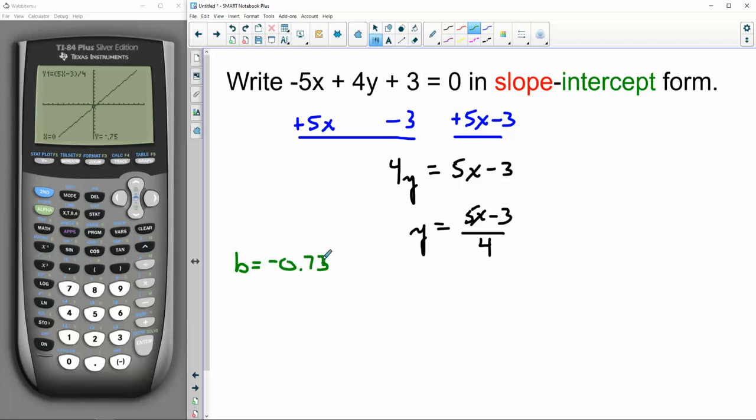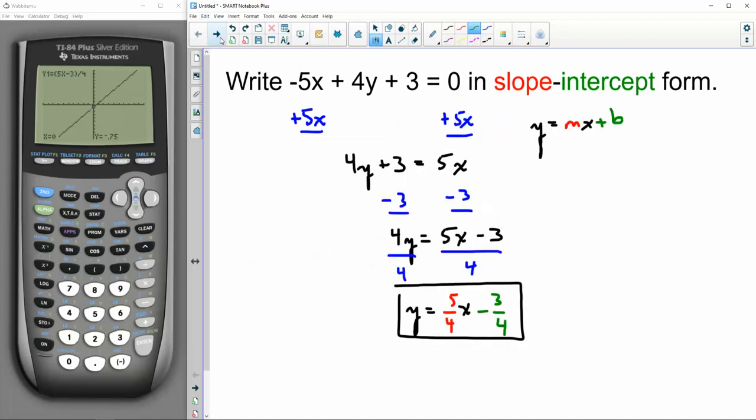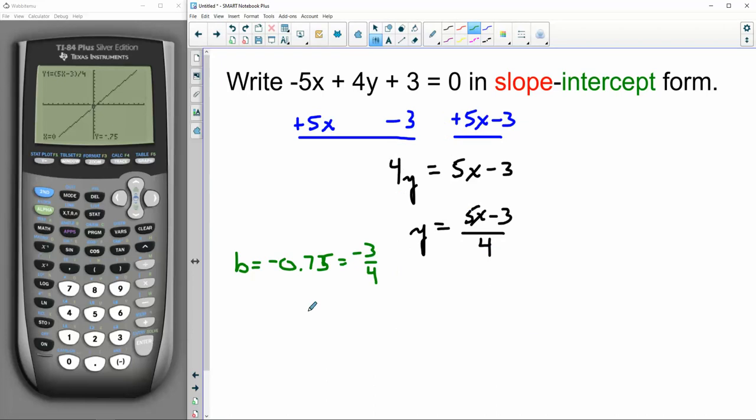And I'll maybe look. Oh, look at there. Graphically I just found that the y-intercept is negative 0.75, also known as negative 3/4, which was the same thing we got the last time, right?